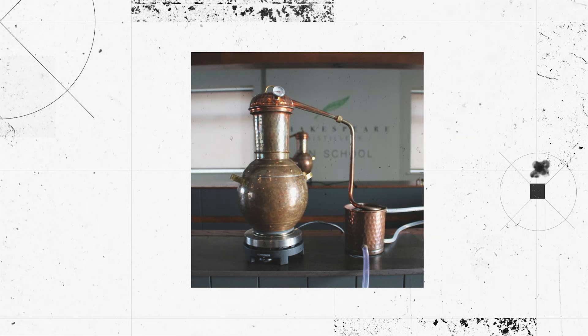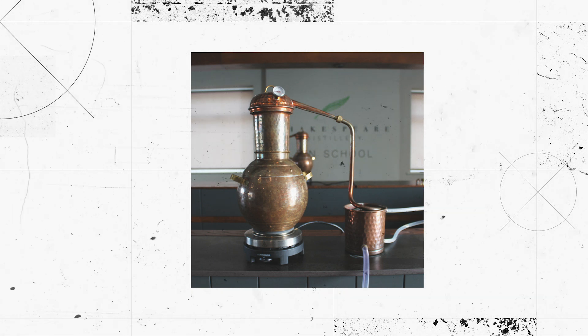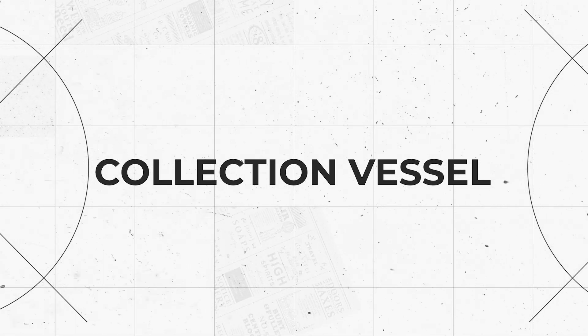The condensing element here is instead a worm tub, which is a coiled pipe that gradually gets smaller and smaller in diameter as it reaches the bottom. The worm tub is filled with cooling water, and as the spirit travels through the pipe, it will offload all of its heat into the cooling water. The spirit will then be collected in a collection vessel.